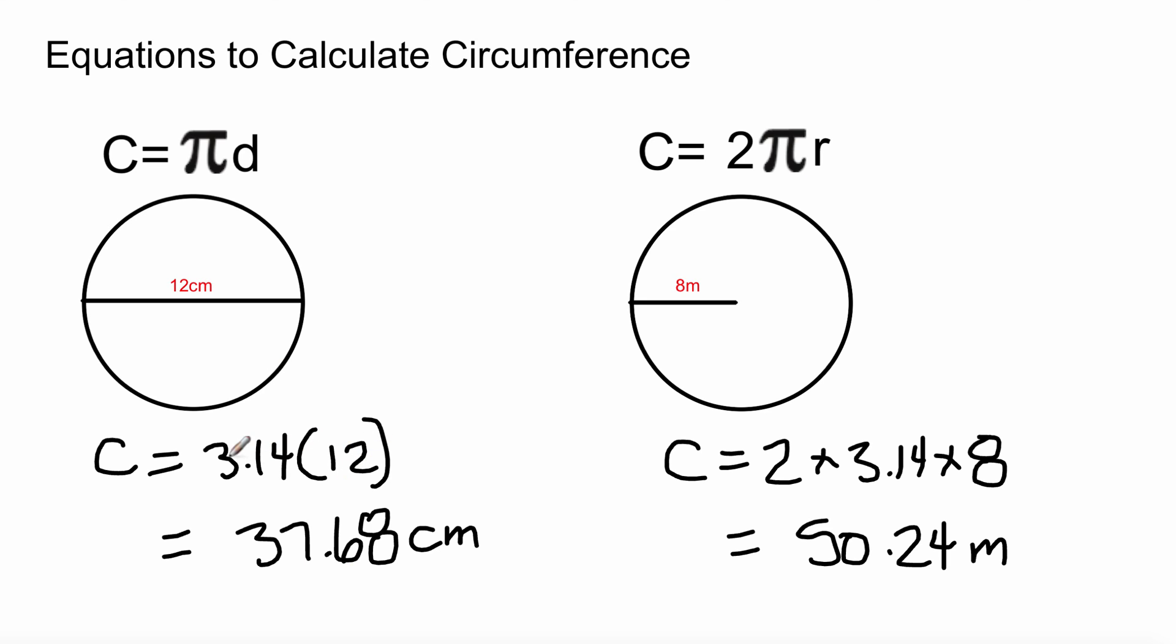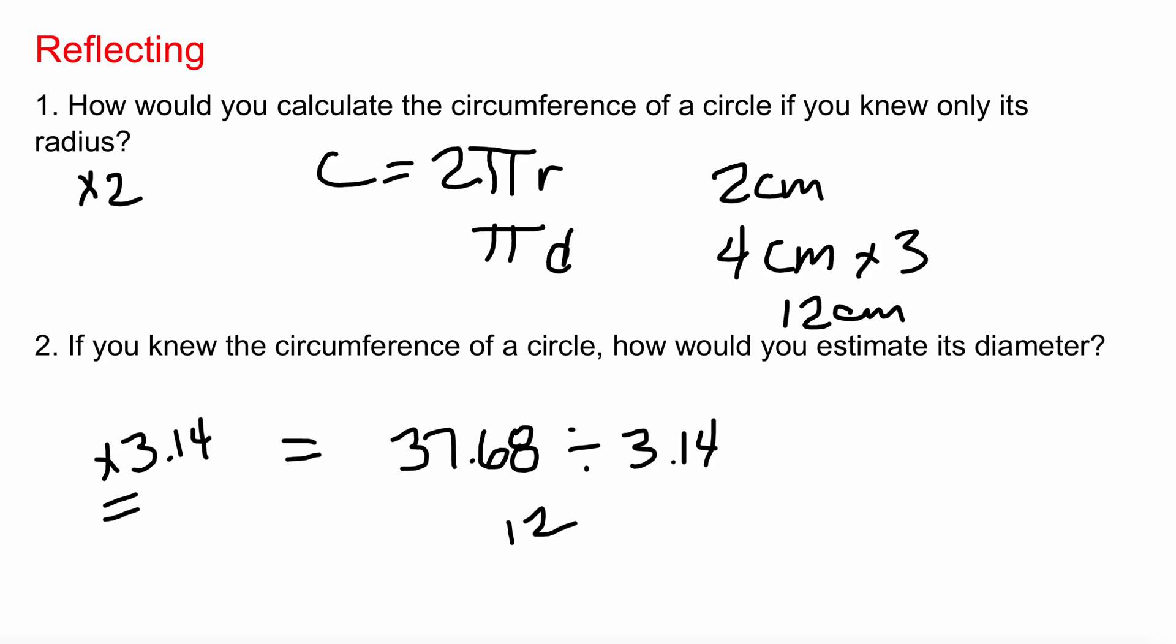Easy stuff, because if we use this example right here, diameter is 12, here's your answer. We multiplied pi times 12 to get your circumference. Well it works the other way too. If you're multiplying, the opposite equation is division. So easy, easy stuff. When you multiply something to go the other way, use division. Easy, simple stuff.